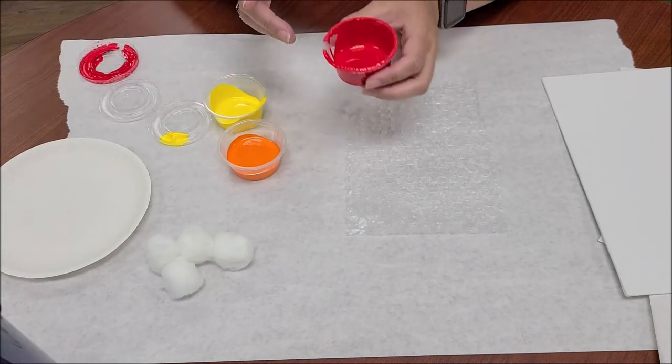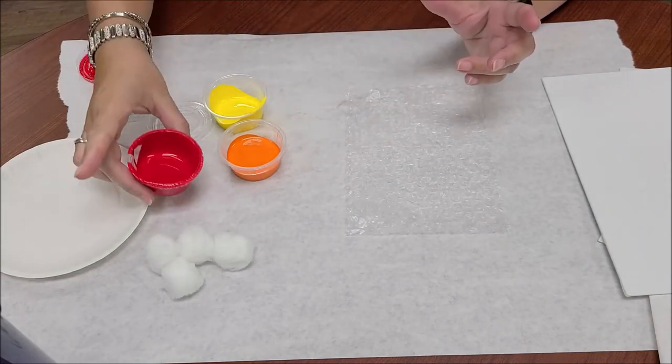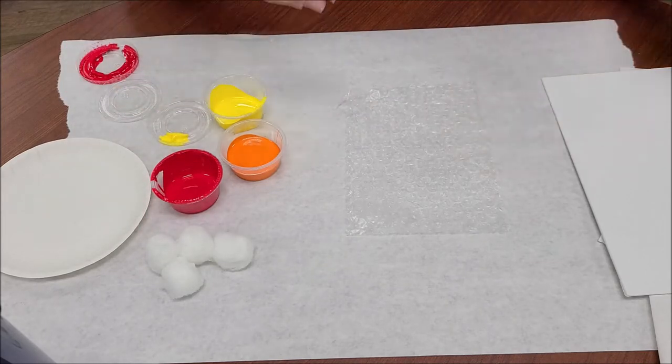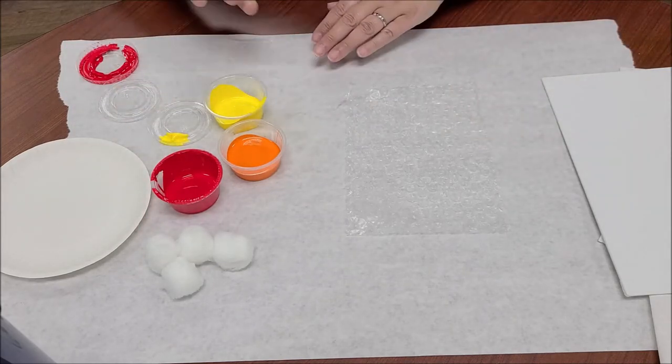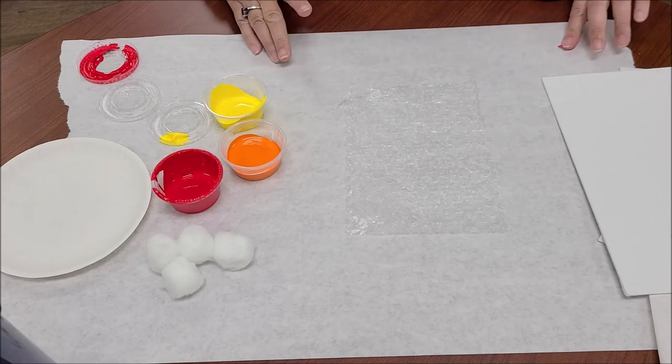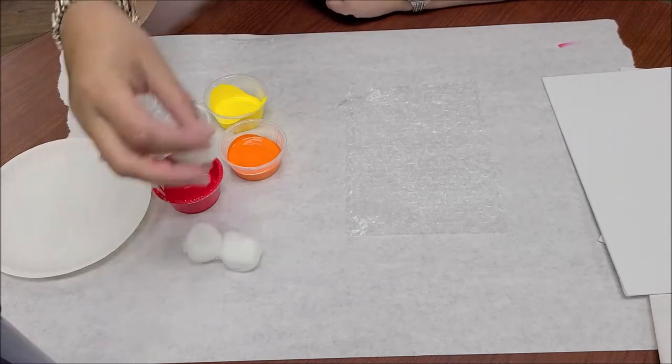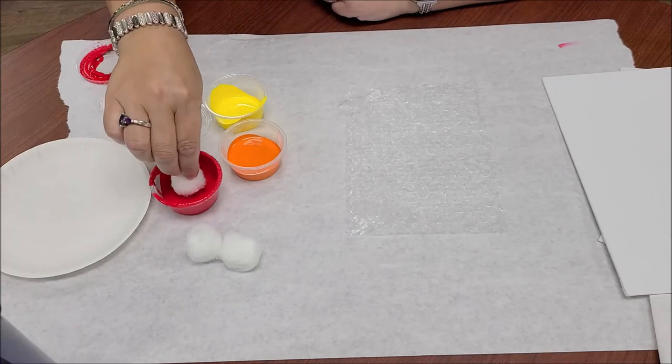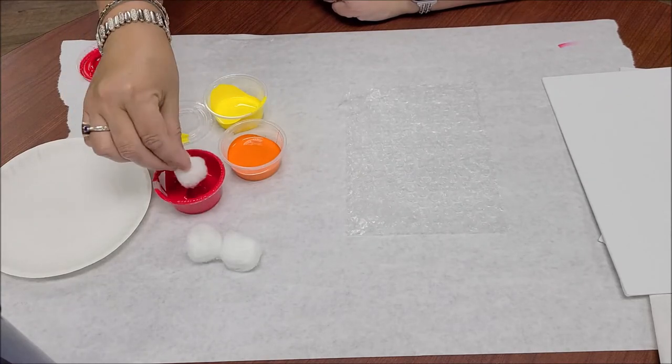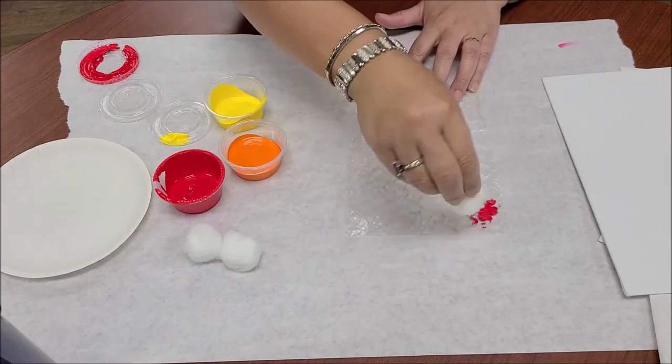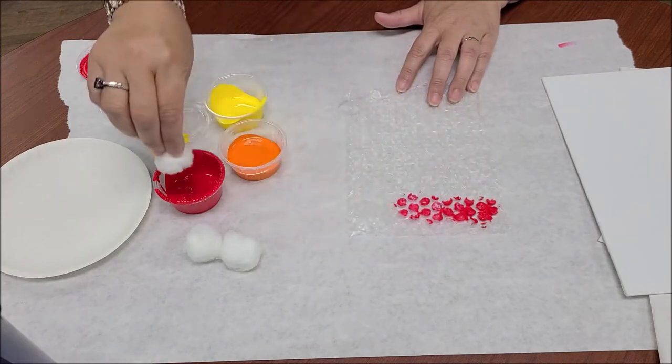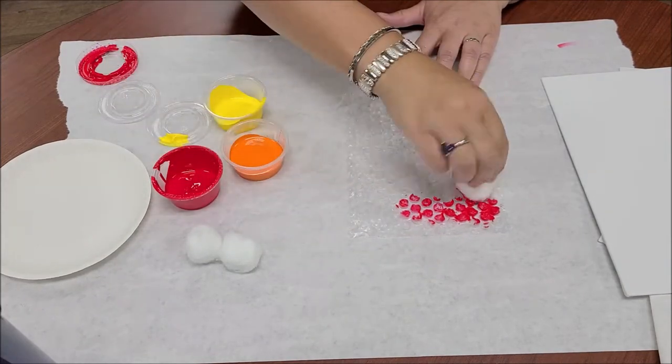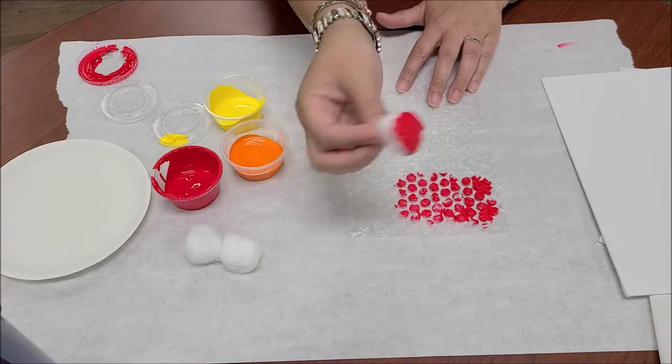And as you can see, these paints, this one tipped over, but the paints are still really good and they've been in these little cups for a few weeks now. You're going to take one of your cotton balls and dip it in a paint cup, whatever color you want to use, and just paint on the bubbles. You can do this in any pattern that you want. It does get messy.